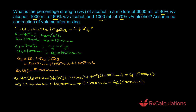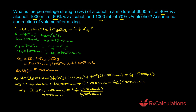We add up all the numbers on the left-hand side: 120,000 + 60,000 + 70,000 = 250,000, so 250,000 = Cf × 5000 milliliters. Dividing both sides by 5000 milliliters, we get Cf = 50%. So the final concentration of alcohol in the mixture is 50% v/v.